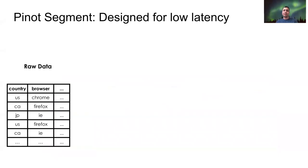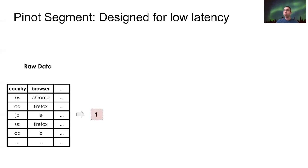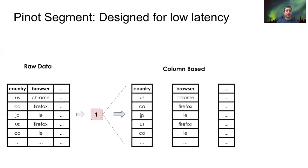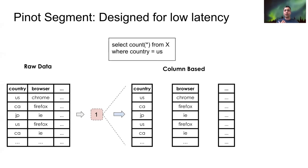Let's take a deeper look into the Pinot segment, which is really the secret sauce behind the low latency aspect of Pinot. A segment is a chunk or subset of the data. Internally, the segment organizes this data in a column format, which means all the country data will be grouped together, all browser data will be grouped together, and so on. This is great for executing analytical queries. For example, for a simple query like 'count star where country is US,' all I need to do is process this one column instead of all the rows from the segment. This obviously leads to a good speed-up and low latency.